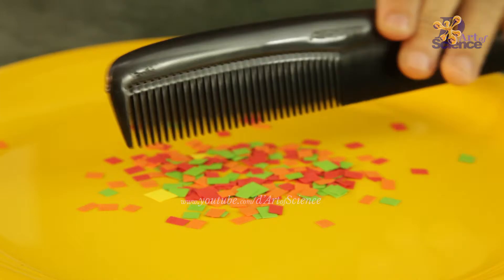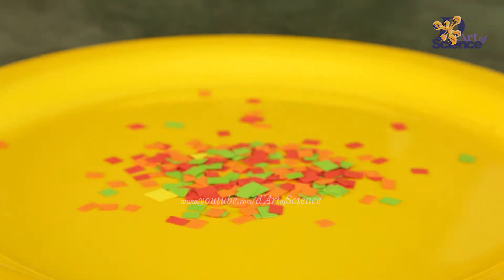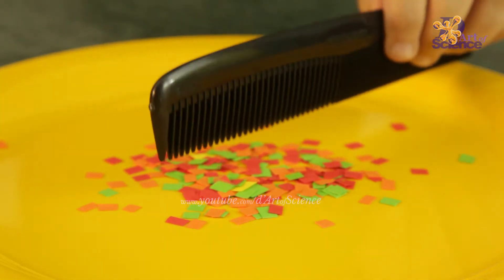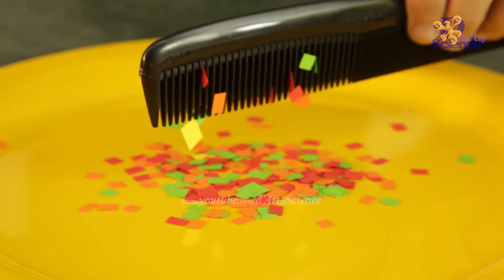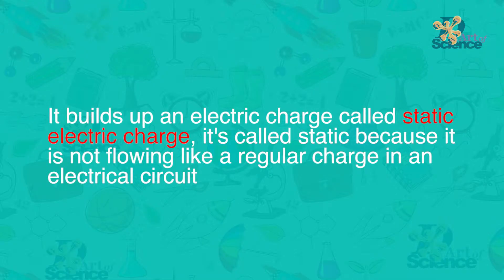See here, the comb at first has no electric charge and is called an uncharged object and it doesn't affect any other object. Now when we rub the comb through the hair, the friction caused by combing or rubbing it on the hair builds up an electric charge called static electric charge.